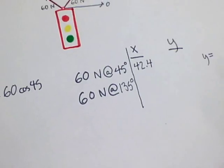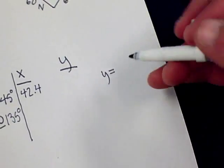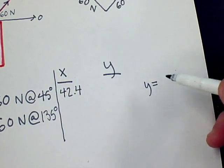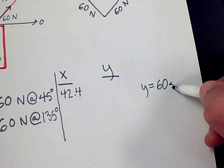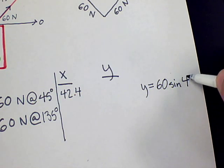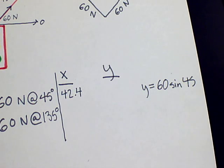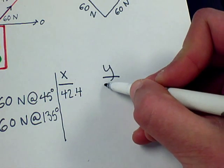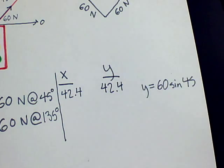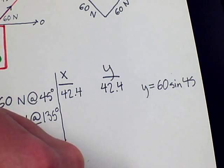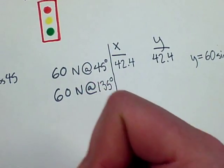And then for the y component, you will repeat the process, but instead of using cosine, you will use sine, which is also equal to 42.4.